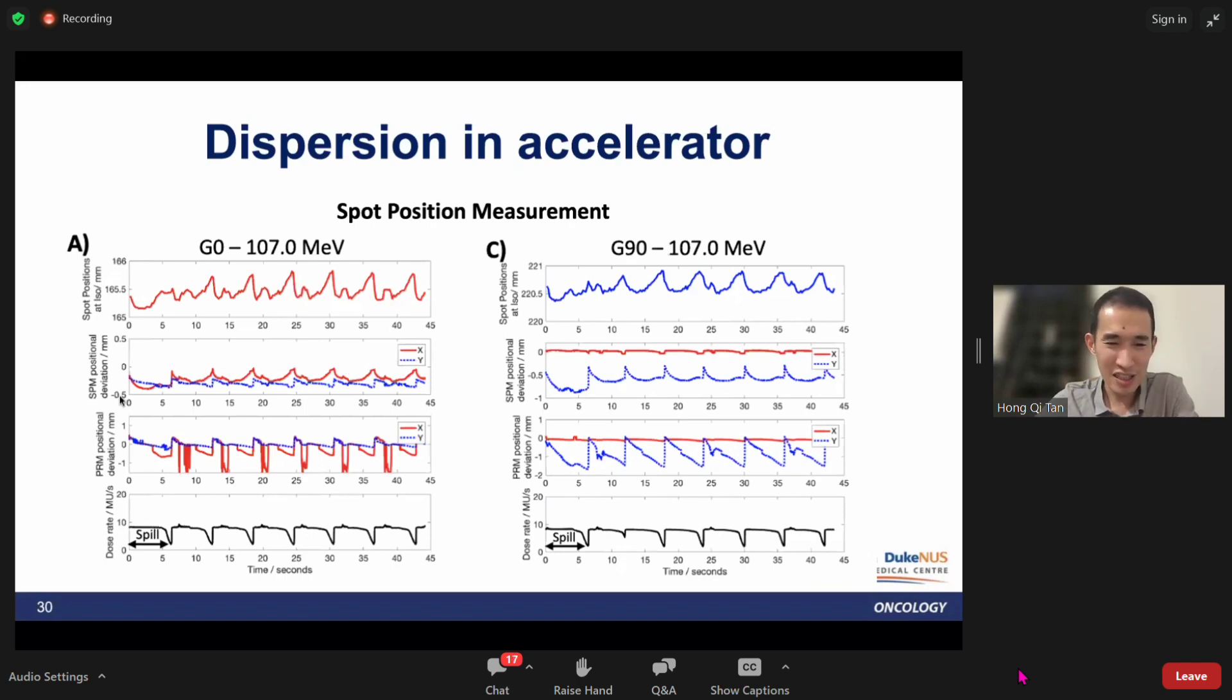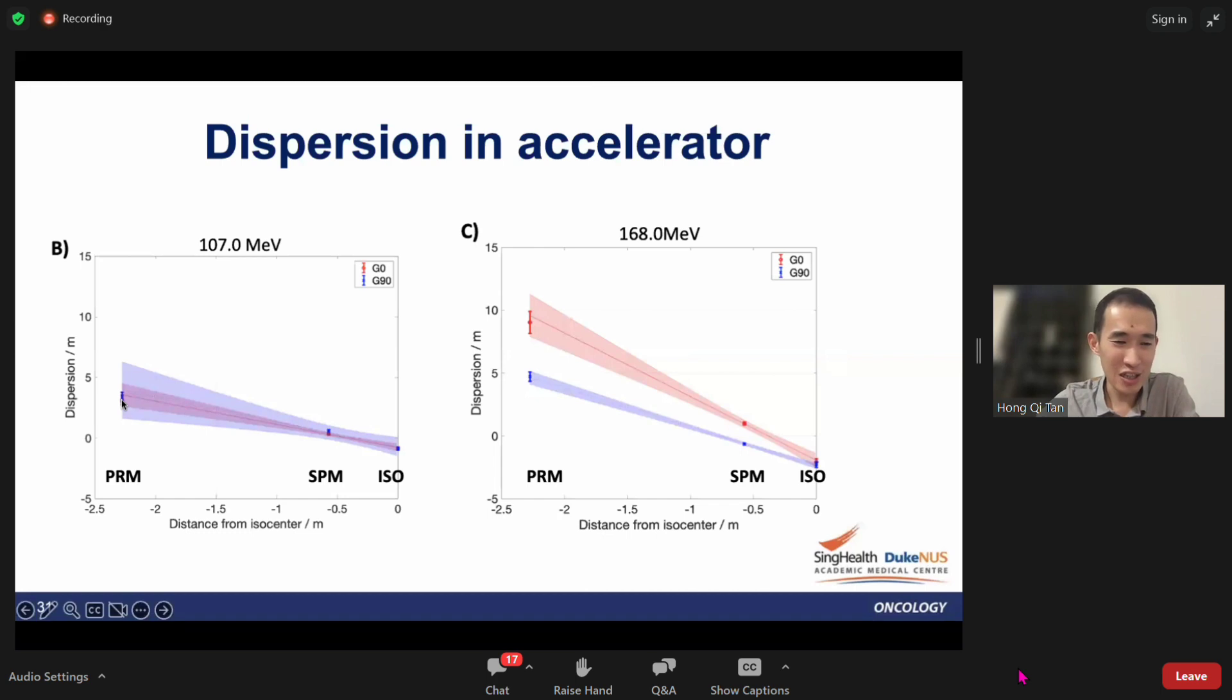With this data, we get the dispersion at the PRM, SPM, and ISO for both energies. Actually, we did this for all nine energies, but I'm showing these two just to demonstrate the idea. You can see that these three points do align along a straight line. There's no reason to expect that gantry 0 and gantry 90 should have the same dispersion profile because the bending magnet current is tuned differently based on gantry angles in the Hitachi system.